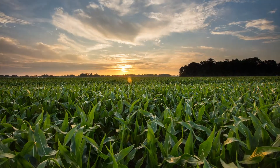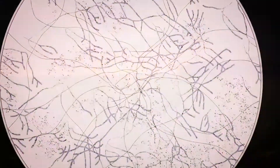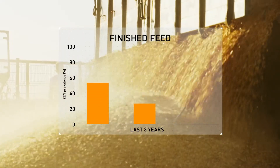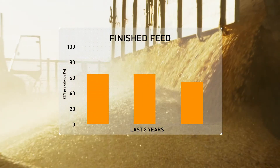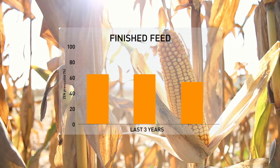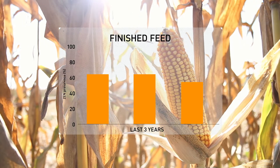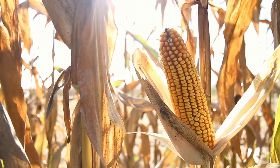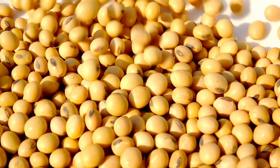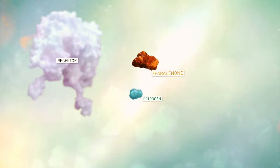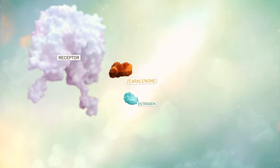Zearalenone, or ZEN, is a mycotoxin produced by several fungi species. Findings of the Biomin Mycotoxin Survey — the longest-running and most comprehensive data set on mycotoxin occurrence — have revealed that ZEN occurs in all kinds of commodities worldwide, especially in corn, wheat, and soy.